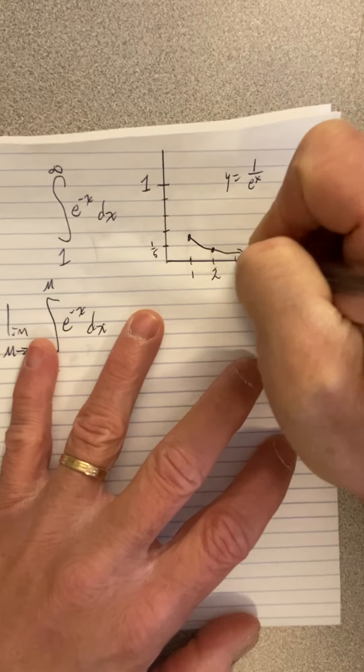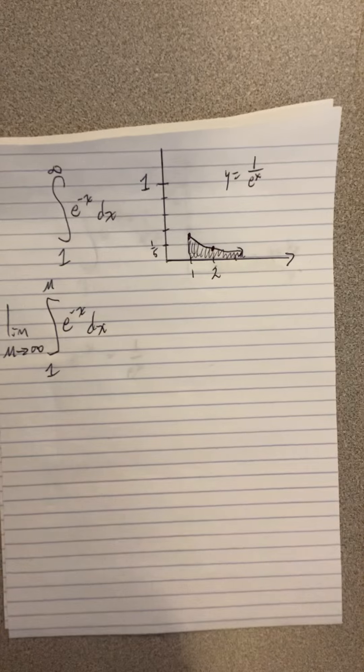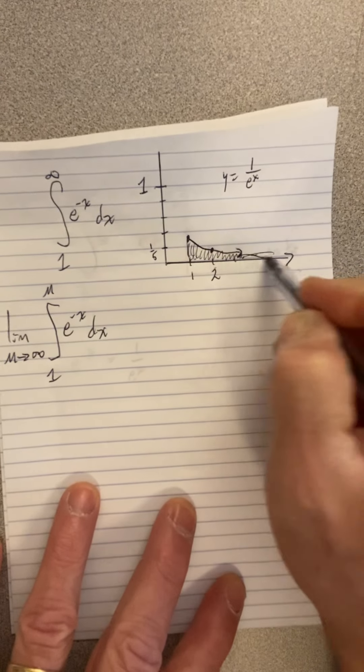And it's just going to keep dropping. And it's a continuous function. Exponentials are continuous. So we're talking about this area here. And we want to know, does it go out forever, infinite.